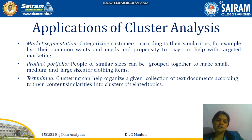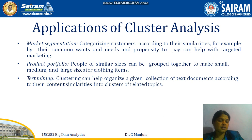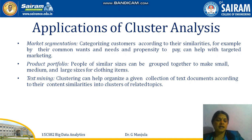The first application is market segmentation — categorizing customers according to their similarities. For example, by their common wants, needs, and propensity to pay, we can help with targeted marketing. We check similar behaviors in shopping, purchases, mode of transactions, or mode of payment. If around 30% of customers share similarities, we can apply different strategies for them. Similarly, for product portfolio, people of similar sizes can be grouped together to make small, medium, and large sizes for clothing items.